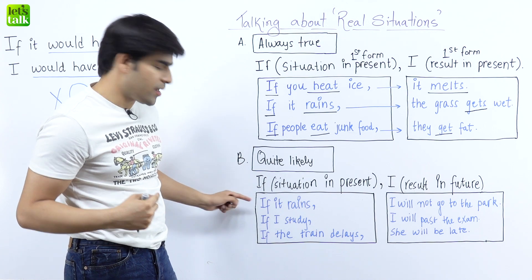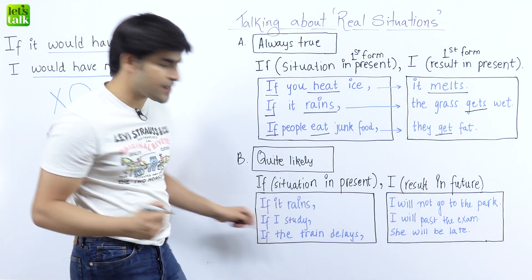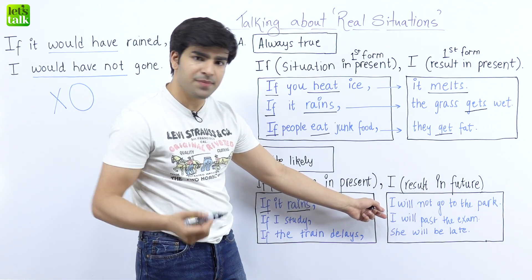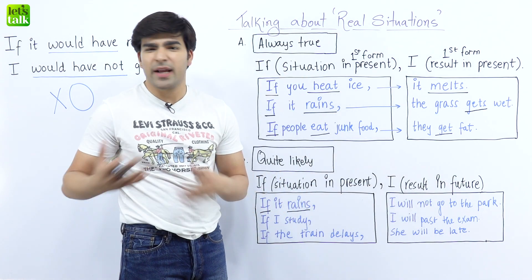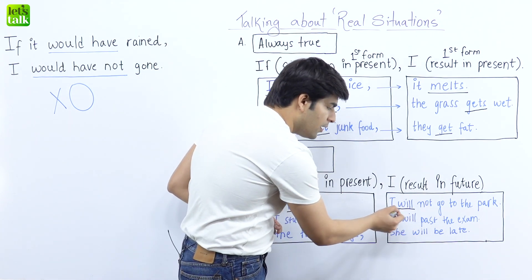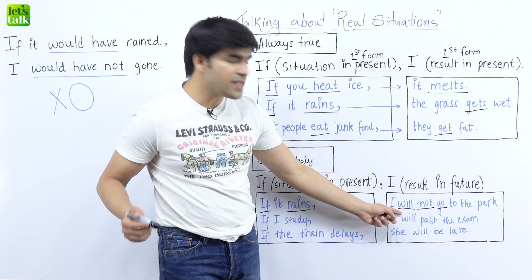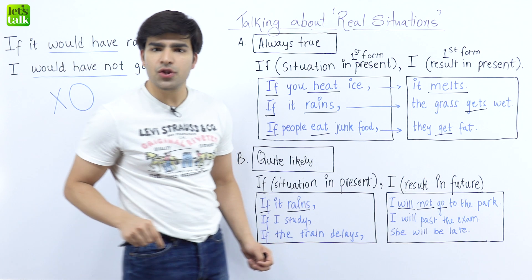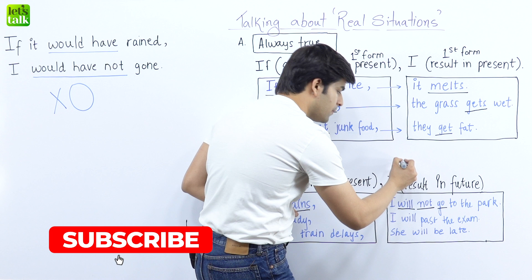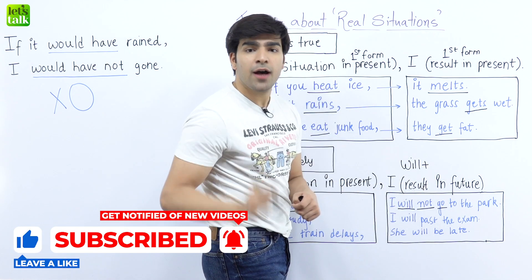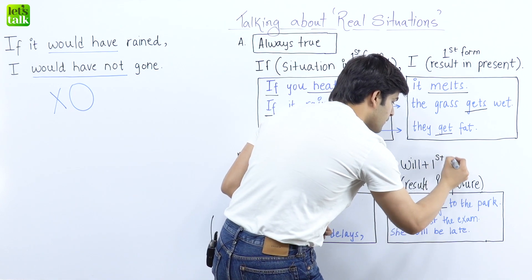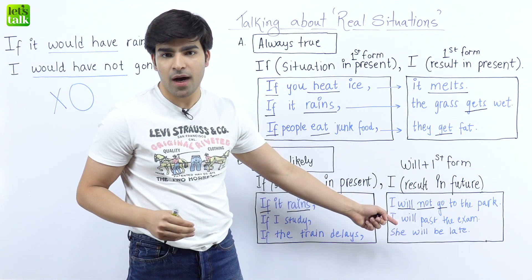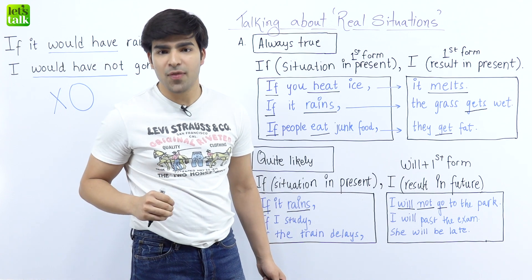Let's understand it using example one. If it rains — using 'if' and the base form 'rains' — in the result part I say: I will not go to the park. So the two important words are 'will' and 'go'. I'm using 'will' to talk about the result in the future. When you're talking about situations that are quite likely to happen in the future, you use will plus the first form, the base form of the verb. So: if it rains, I will not go to the park; if it rains, I will not attend the party.